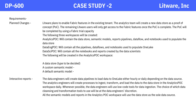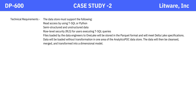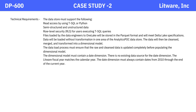All the semantic models and reports in the Analytics POC workspace will use the data store as the sole data source. Technical requirements: the data store must support read access by using T-SQL or Python, semi-structured and unstructured data, and row-level security (RLS) for users executing T-SQL queries. Files loaded by the data engineers to One Lake will be stored in Parquet format and will meet Delta Lake specifications. Data will be loaded without transformation in one area of the Analytics POC data store, then cleansed, merged, and transformed into a dimensional model. The data load process must ensure that the raw and cleansed data is updated completely before populating the dimensional model.